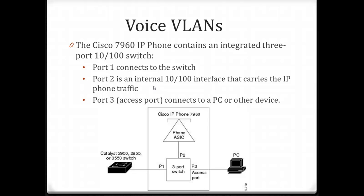Usually the port set up on the switch for voice traffic will be plugged into a Cisco IP phone. Cisco IP phones typically incorporate a three-port switch right on the phone: one port connects to the switch with the voice VLAN configured, one is an internal port that connects to the phone itself and carries the phone traffic, and the third is an access port that allows connecting another device such as a PC. In a building, a Cisco Catalyst switch (such as a 2960 or 3560) in the wiring closet runs a wire to the office phone, and the phone connects to the workstation.